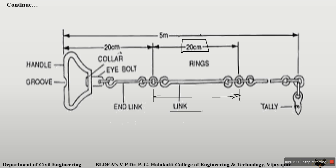Every time it is not possible to count the number of links, so at some distances they are marked with a tally. You can directly count the number of tallies, then with respect to the distances marked on the tally you can directly measure the distance between points.